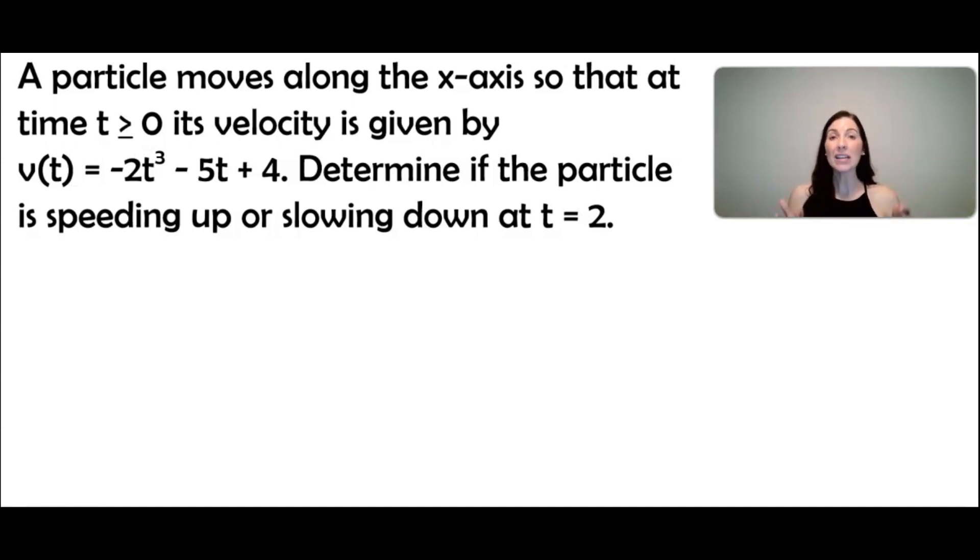Alright, so the correct way to approach a problem like this where you want to know if a particle or an object is speeding up or slowing down, you want to compare the signs of velocity and acceleration at the time value given. When I say compare the signs, you want to see if the signs are positive or negative, if they're both positive or both negative, or whether one is positive and one is negative. So let's see what happens in this example.